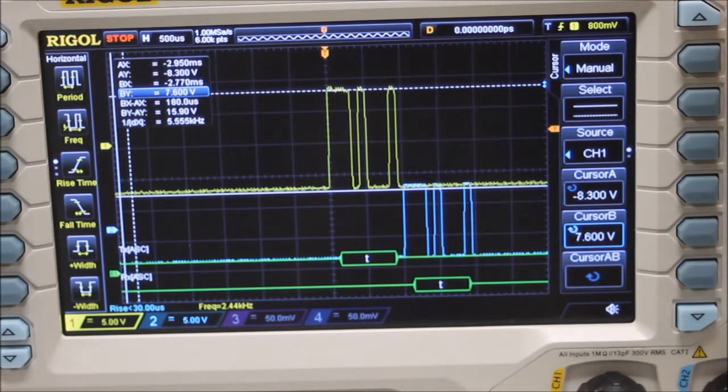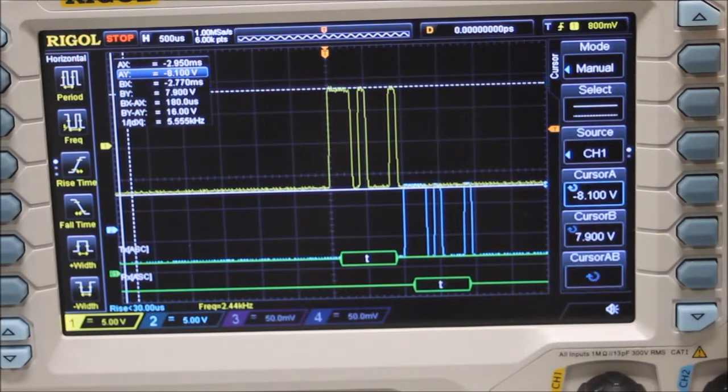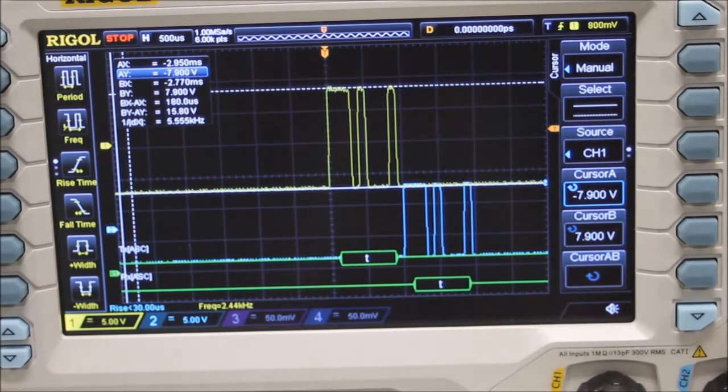And I can see here, so I'll line that up with the top there, that we've got a voltage of about 15.8 volts. Now the RS-232 standard, I think, says between 3 and 15 volts, so that's pushing the limits of the RS-232 standard.